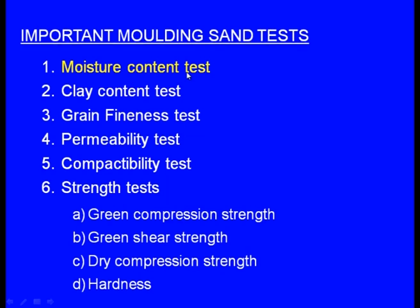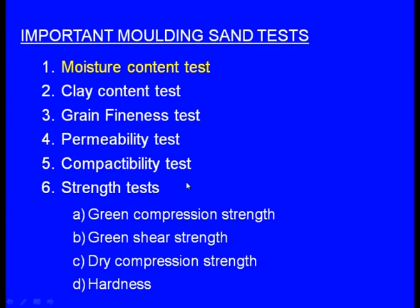These are the important molding sand tests: one is the moisture content test, another one is the clay content test, next is the grain fineness test, then the permeability test, the compactability test, and finally the strength tests. Among the strength tests, there are four: green compression strength, green shear strength, dry compression strength, and finally hardness. Now let us see these tests one by one.